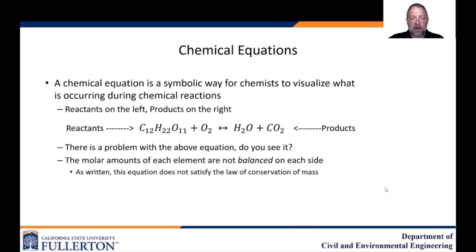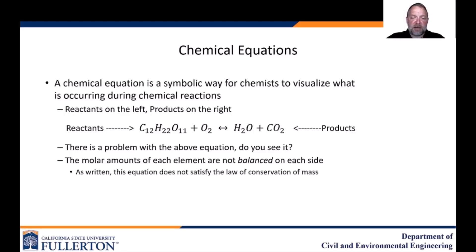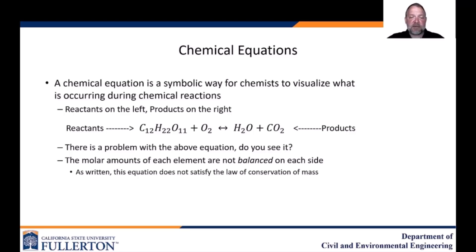It's not balanced. If you look at the number of carbons on the left and the number of carbons on the right, they are not the same — there are 12 carbons on the left but only one carbon on the right. The same problem exists with hydrogens: 22 hydrogens on the left and only two on the right. So this is not a good chemical equation. It tells us what molecules are combining, but it does not tell us what the ratios are.